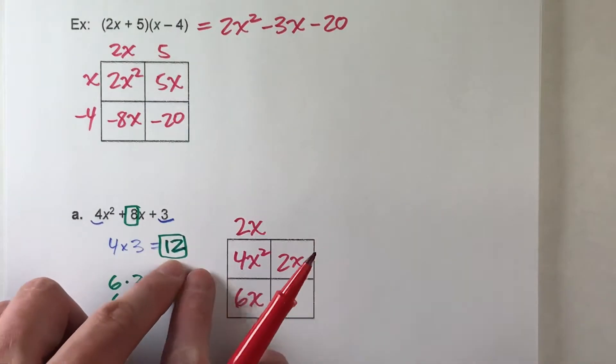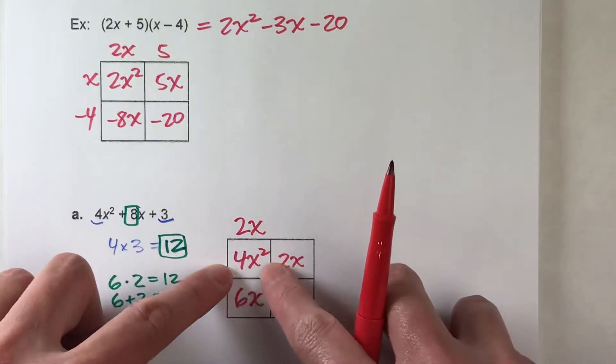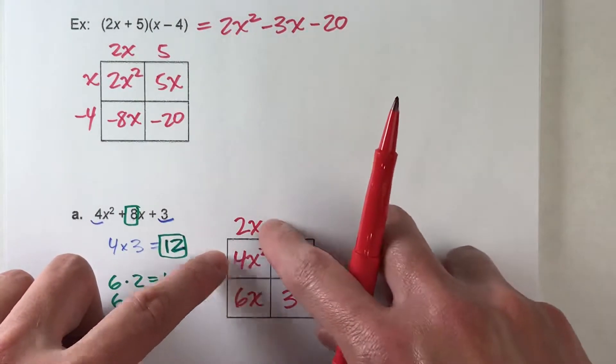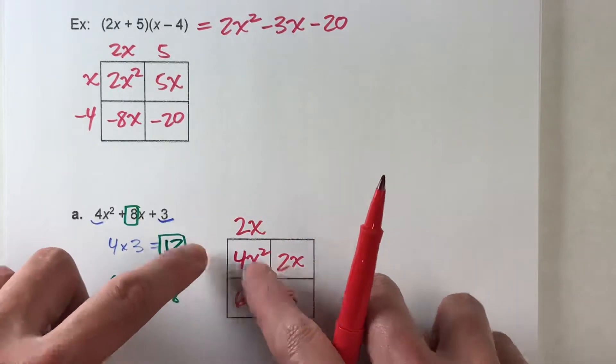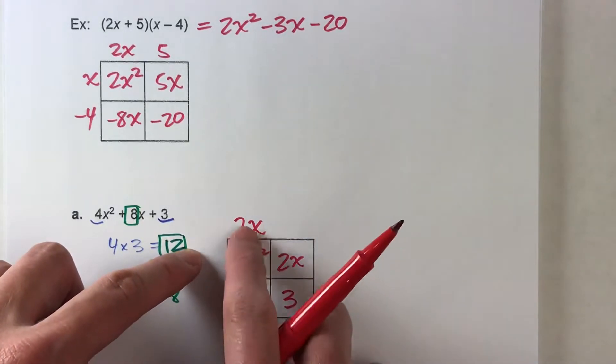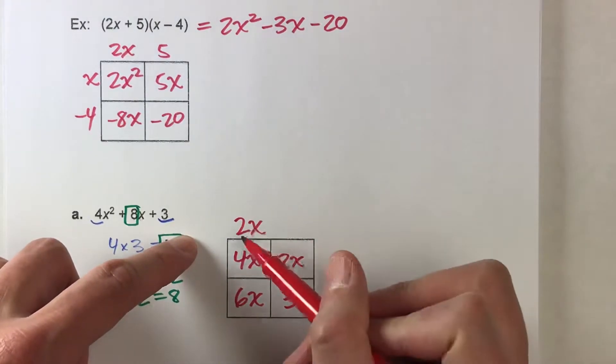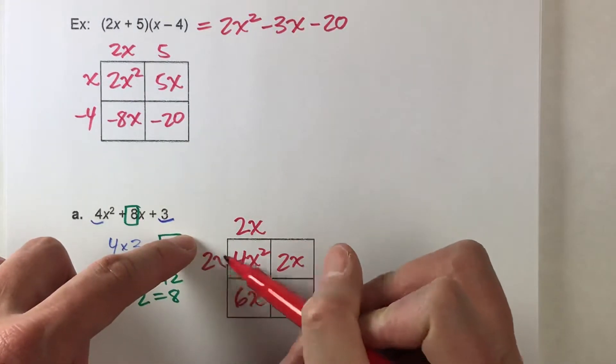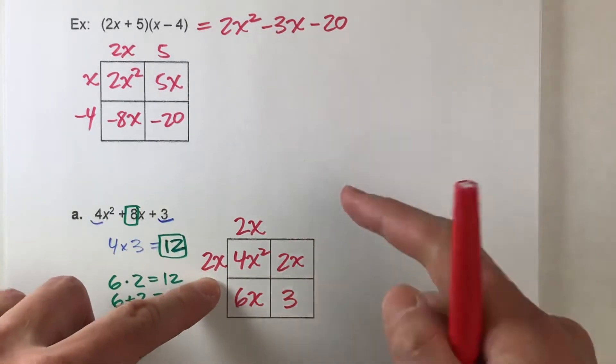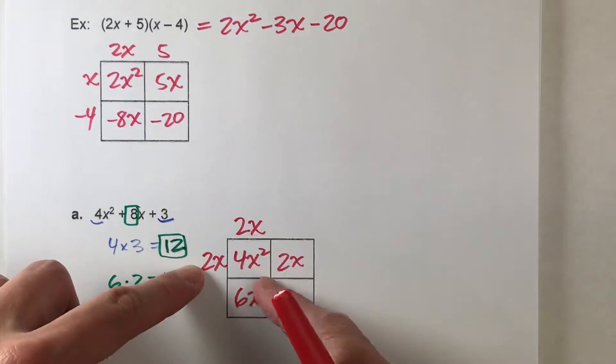Now, let's go over on the side. If this box is supposed to multiply, the sides are supposed to multiply to get 4x squared, what does this side have to be so that 2x times the side would equal 4x squared? Well, 2x times 2x gets me 4x squared. So I've just found the lengths of the sides of that box.